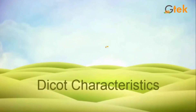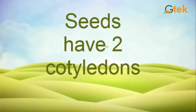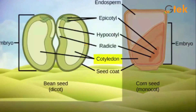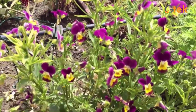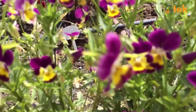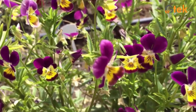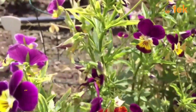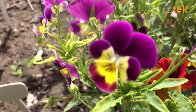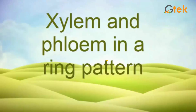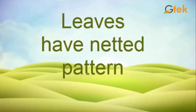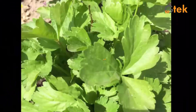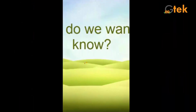Whereas the dicot characteristics are: the seeds have two cotyledons — you can see the dicot seeds have two cotyledons. Here the flower parts are in fours or fives. You can see the dicot flower over here, it contains two cotyledons, and the number of petals is four or five. And here the xylem and phloem are in a ring pattern — you can see the ring pattern over here. Here the leaves have the netted pattern, which is represented over here.